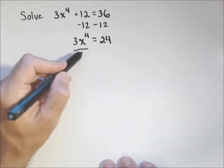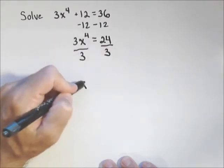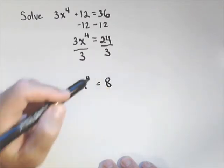Next step, we'll divide both sides by three. And we get x to the fourth equals eight.